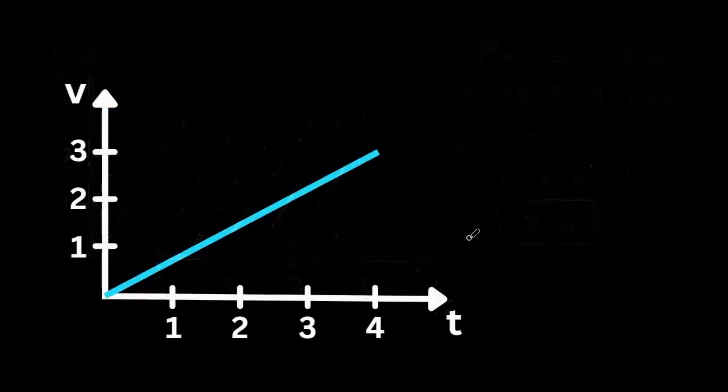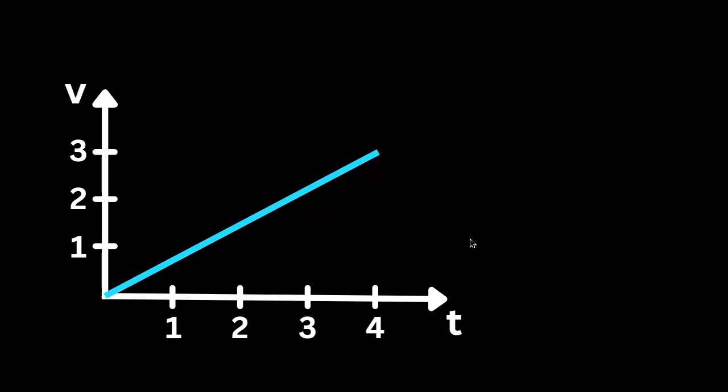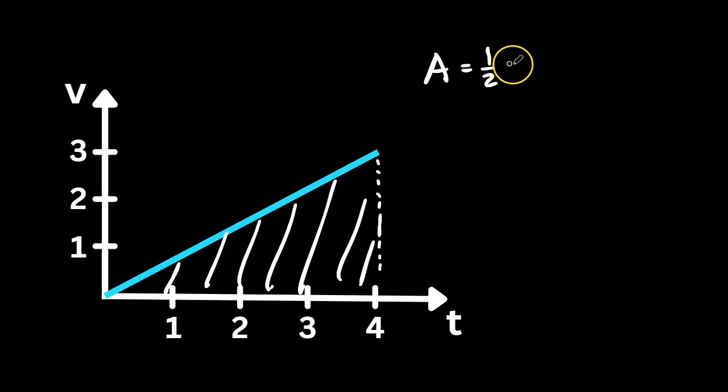Now we have an object moving at an increasing velocity, and we want to find out the displacement that the object travels over 4 seconds. So the area under the curve is what represents the object's displacement. Notice that this area is a triangle, so we're going to use the area of a triangle to solve for the displacement. The area of a triangle is 1 over 2 base times height.